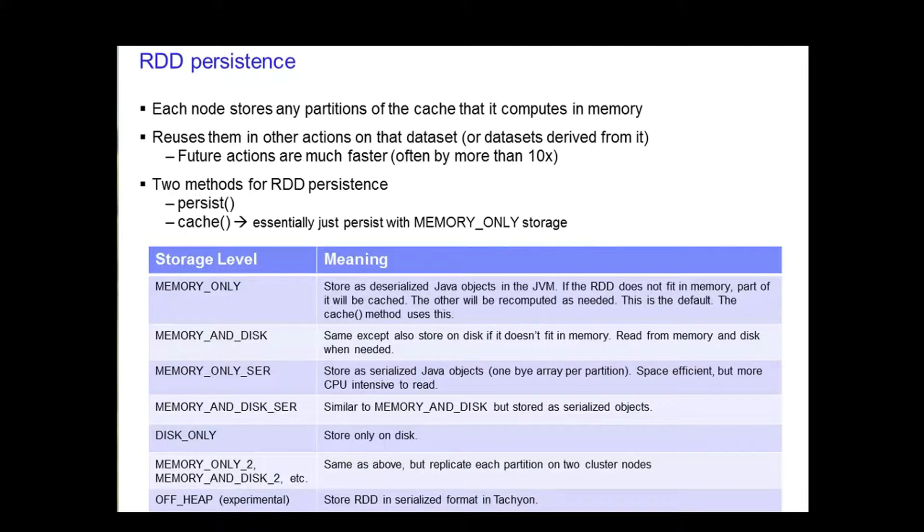There are two methods to invoke RDD persistence: persist and cache. The persist method allows you to specify a different storage level caching. For example, you can choose to persist the dataset on disk, persist it in memory but as serialized objects to save space, etc.